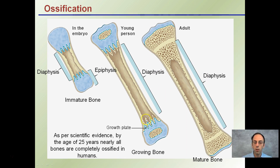An adult is considered to be at age 25 because nearly all the bones are completely ossified in humans by the age of 25.